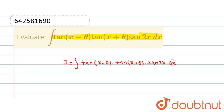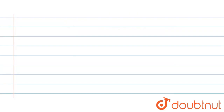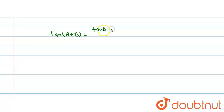Now in the next step, we know the formula: tan(a + b) is equal to tan(a) + tan(b) upon 1 minus tan(a) into tan(b).